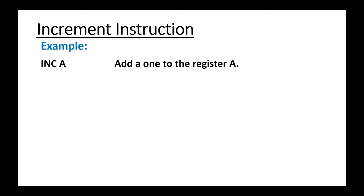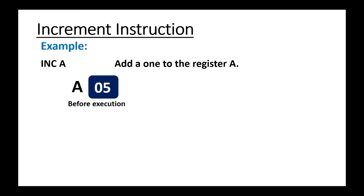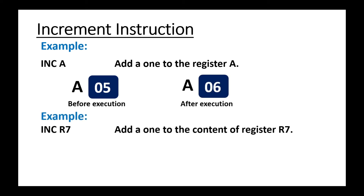INC A adds one to the content of register A — basically it is incrementing the content of the accumulator by one. Initially A is having 05 before execution, and after execution, after adding one, it becomes 06.